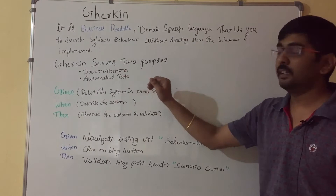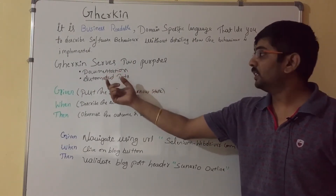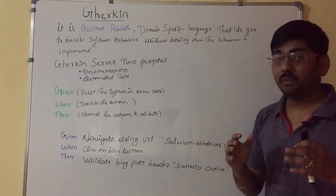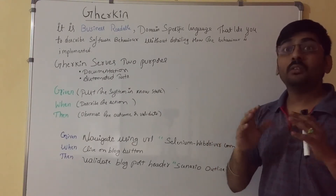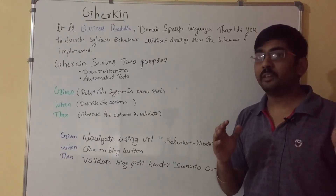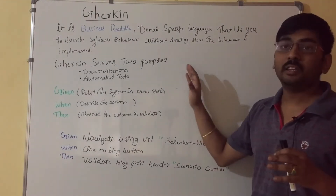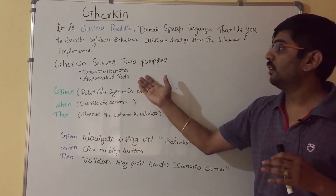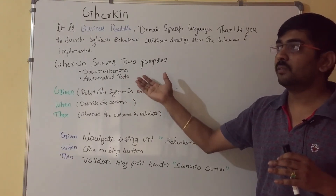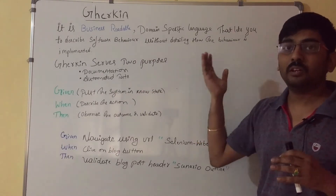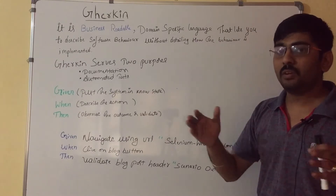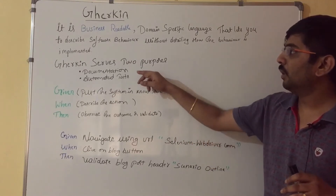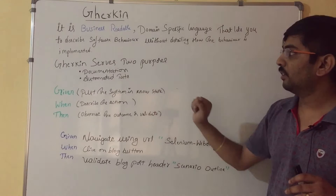Using Gherkin, we achieve two purposes: one is documentation and another is automated tests. In agile, the very first goal is to reduce documentation. In waterfall and other models, a lot of documentation is done. In agile, everything is done in a simple format on one page. Gherkin serves as documentation for the business, as a test case, and as the same requirement for developers — everyone on a single page with less documentation and more clarity.